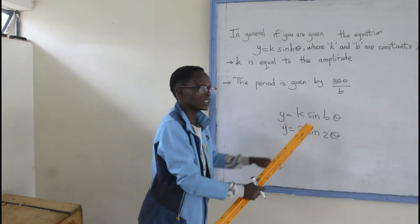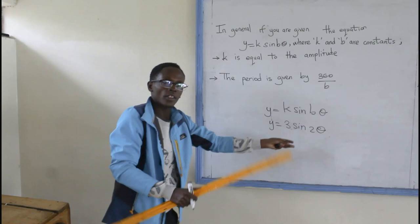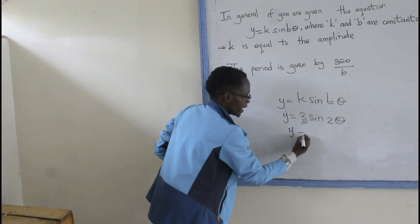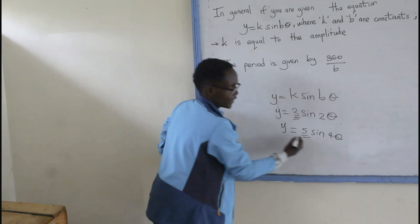And B, which is just the value immediately before the value of the angle. So, let's say this is 3 sine 2 theta. For my case here, my amplitude is 3. If it was Y equals to 5 sine 4 theta, my amplitude is 5.